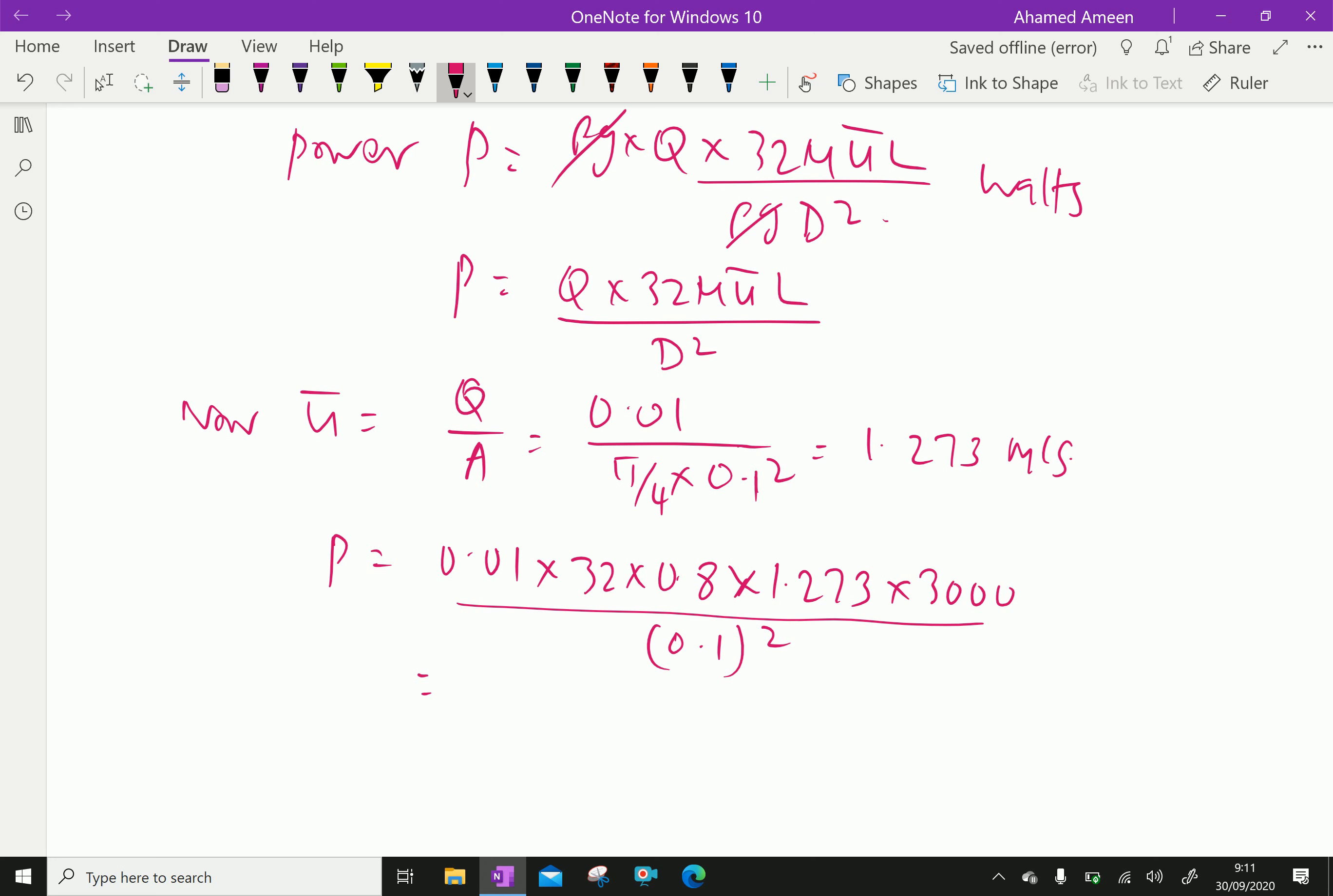We will calculate 0.01 multiplied by 32 multiplied by 0.8 multiplied 1.273 multiplied 3,000 over 0.1 square equal 97766.4 watts which is equal 97.77 kilowatt.